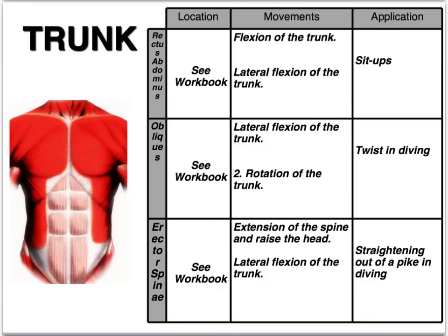The first lot of muscles we are looking at today is in the trunk. We look at the rectus abdominis. The rectus abdominis muscle is right there, and then we look at the obliques which are on the side, and of course the erector spinae are on the back.